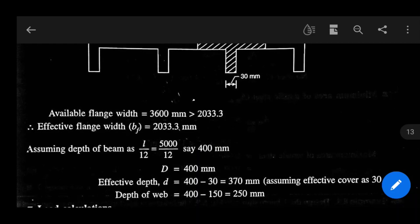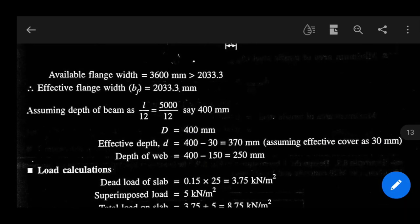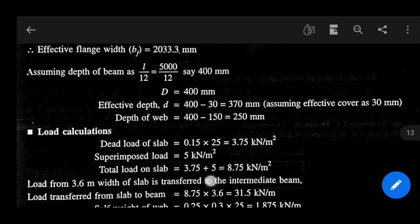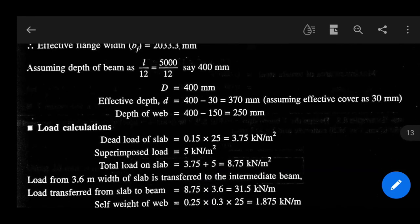So that equals 5000 by 12, say 400 mm. So depth capital D is 400 mm. Now effective depth, small d, equals 400 minus 30. We assumed effective cover as 30 mm, so effective depth equals 370 mm. And depth of web is 400 minus 150, that equals 250 mm, except the width of depth of flange.